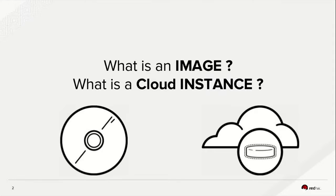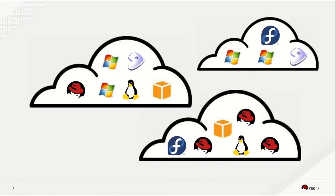An image is a snapshot of an operating system. If you have that image, you can launch an instance — roughly a virtual server or virtual machine — in the cloud, in a public or private network. Not one instance, but many instances. The cloud is like a library of images. You come there, choose the operating system you like, choose the instance type you want, hit the launch button, and voilà — you have your instances up and running.